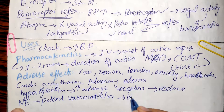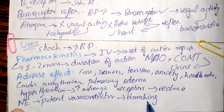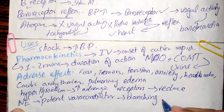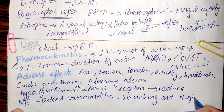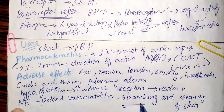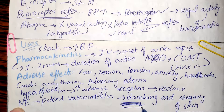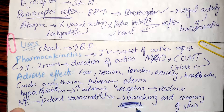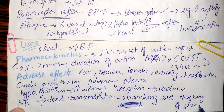Norepinephrine is a very potent vasoconstrictor and may cause blanching — whitening or paleness of the skin — and pain along an injected vein. Due to vasoconstriction, there is decreased blood supply to the skin cells overlying the vein, causing pain and potentially sloughing — shedding or removal — of skin in that area.